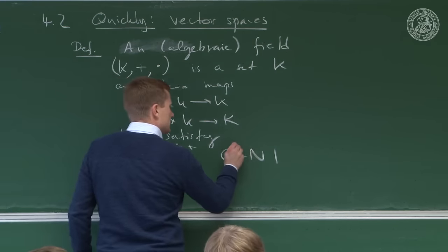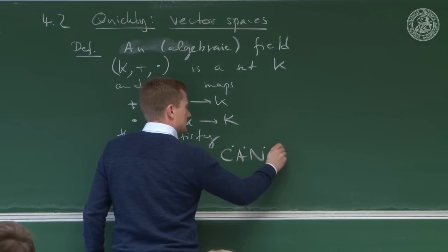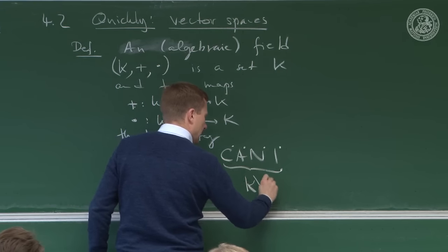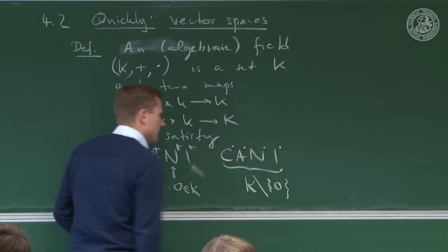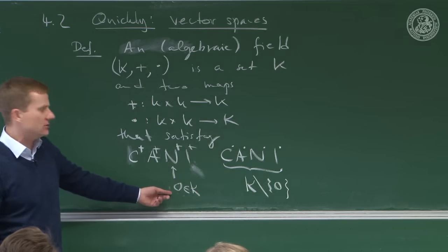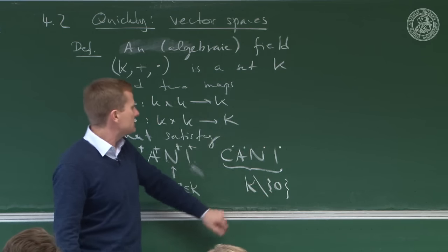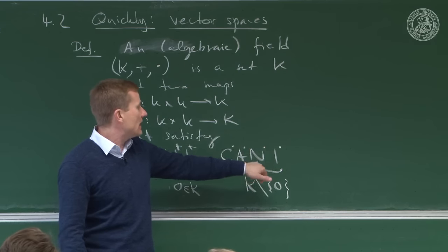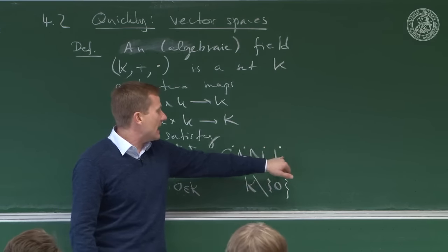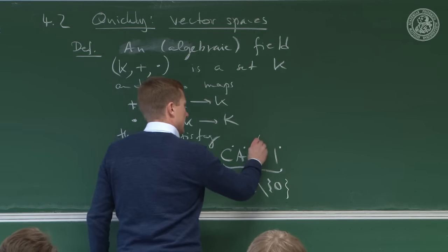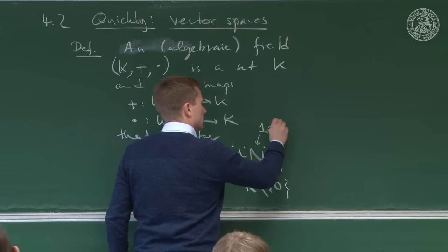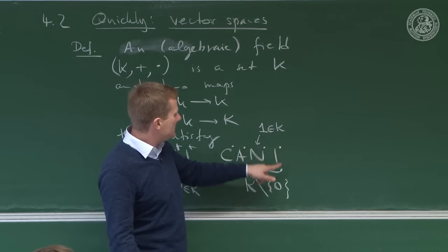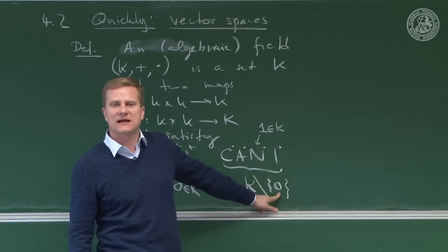It's also CANI for multiplication, but this only applies to the set K where you have removed the neutral element of addition. Once you do this, you have commutativity of multiplication, associativity, a neutral element — which we call one — and then the inverse. And now you see why we had to take out the zero.